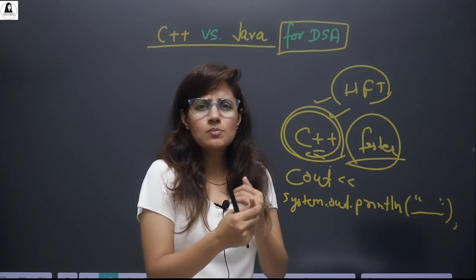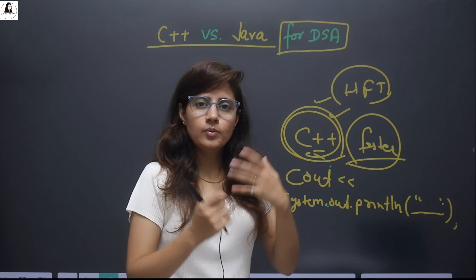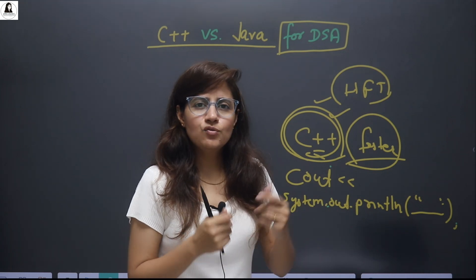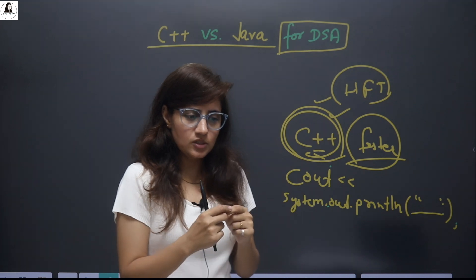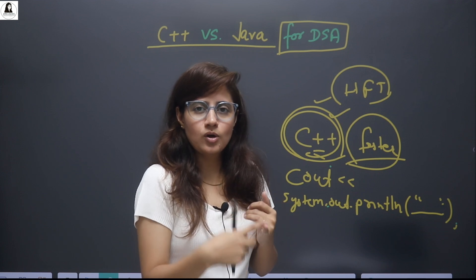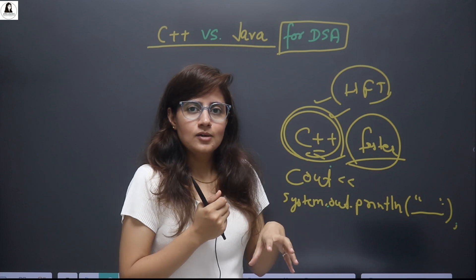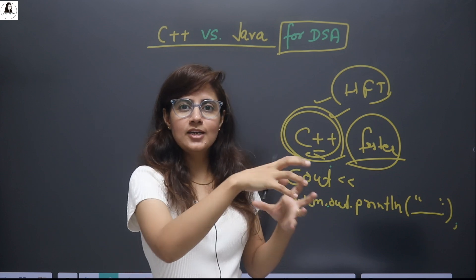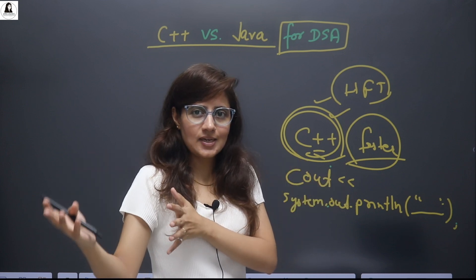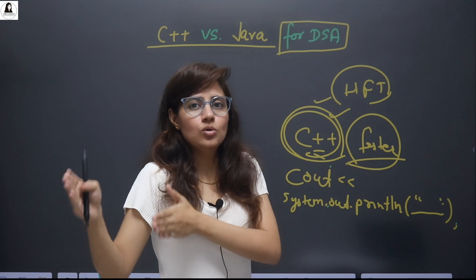The third factor is resources. For both C++ and Java, there are many resources — paid and free — for DSA. So in this case, both are the same. The fourth factor is level of difficulty. For a beginner, C++ is a little harder to learn because of concepts like pointers and manual memory management — you allocate memory and free it yourself, which can lead to memory leaks. In Java, there is an automatic garbage collector, so you don't need to worry about memory management at all, and there are no pointers. So Java is a little easier to learn.